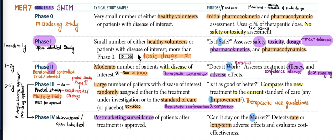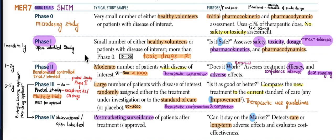The number of subjects in Phase 1 is 10 to 100. It is also called an open label study and usually goes on for one month to one year.